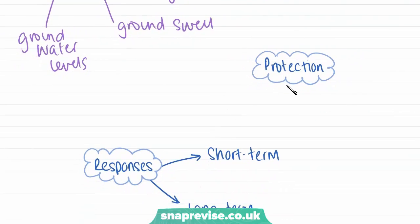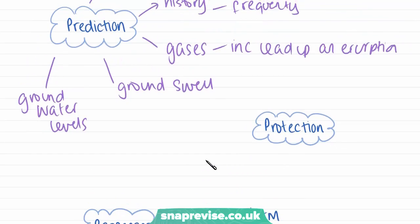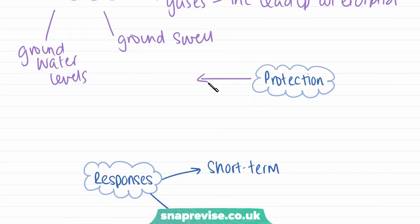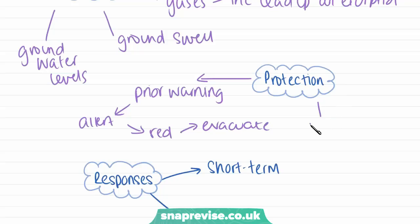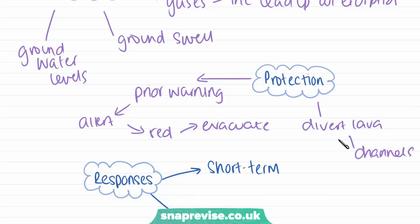The best way to manage volcanic eruptions is through protection, combined with prediction. The most effective form of protection is being able to give prior warning, so it's essential to develop good alert systems. A red alert will be given when people are in imminent danger, telling them they need to evacuate the area, and hopefully they will have enough time to do so. Another way of protecting land or cities is by trying to divert lava flows — this can be done by directing them into man-made channels or by creating a controlled explosion on the side of a volcano, causing the lava to spill out from the other side and lessen the impact.